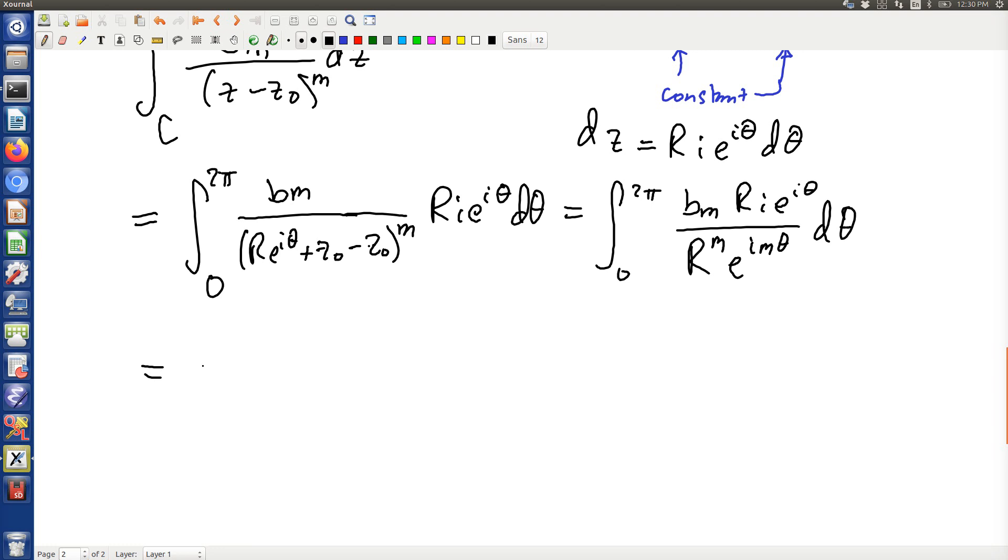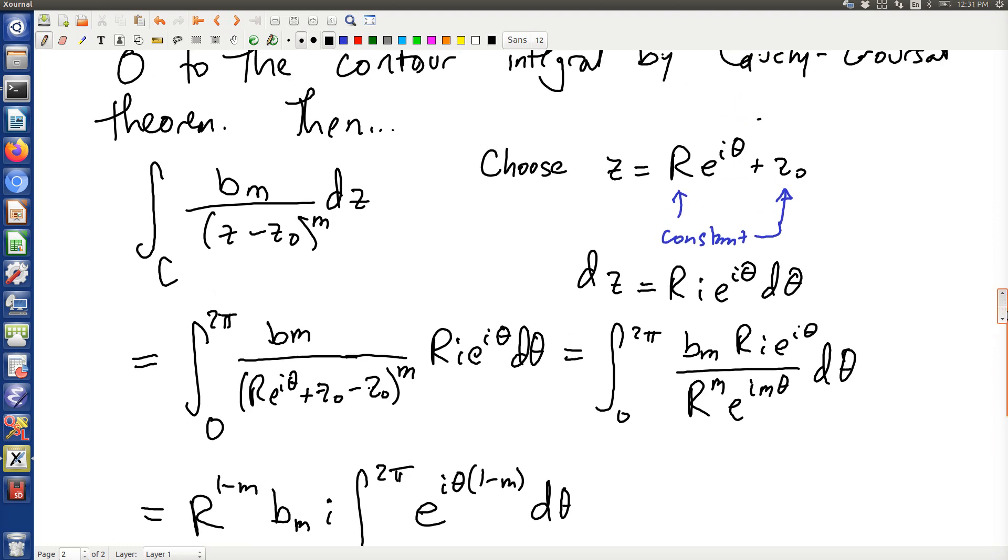The r's kind of come out in the wash, so I get r^(1-m) bₘ. That's a constant. And there's an i, 0 to 2π, and what's left is an exponential e^(iθ) times, and now there's something special going on here, this is 1 minus m dθ.